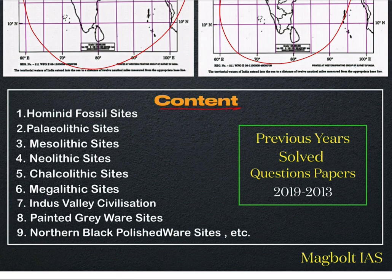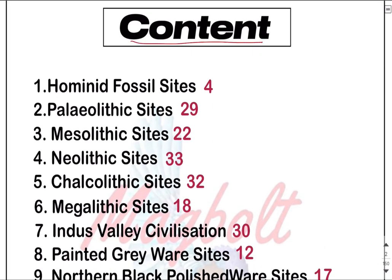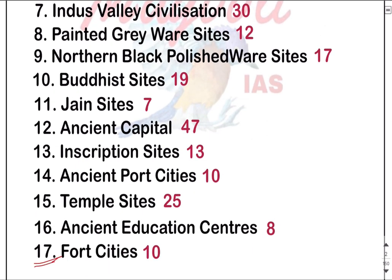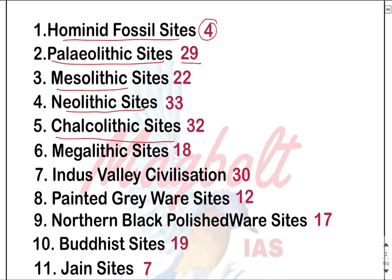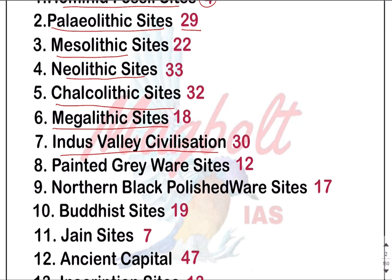Here you can see the contents - these are the prominent sites which come in the examinations. We also have previous year solved question papers. We have 17 most prominent site categories which are frequently asked in the UPSC map sections of History Optional. These include hominid fossil sites (4 sites), paleolithic sites (29 sites), mesolithic sites, neolithic sites, chalcolithic sites, and megalithic sites. Indus Valley Civilization related sites - 30 most important sites have been mentioned.